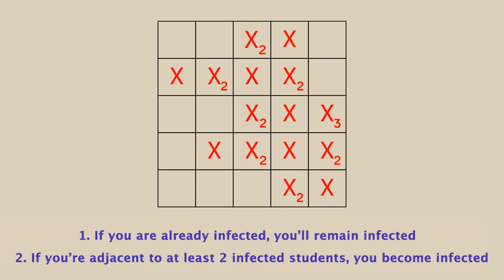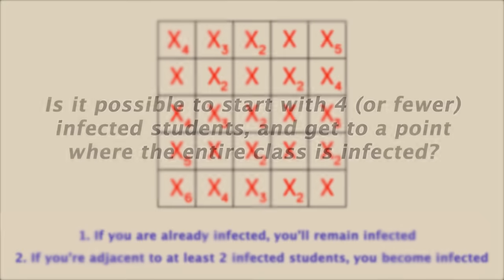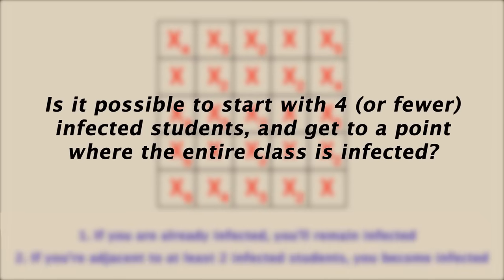Then after another minute, the same thing would happen. Now all these students would become infected. After another round, these x4 squares will become infected, and eventually everyone becomes infected. So here comes the math problem. The question is, for this 5x5 grid, is it possible to start with four or fewer infected students and get to a point where the entire class, aka every square, is infected?